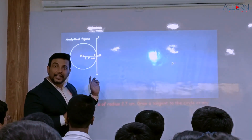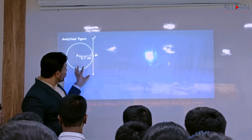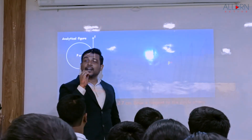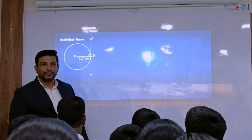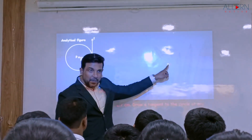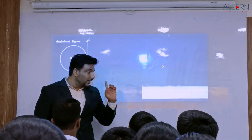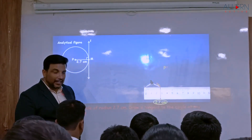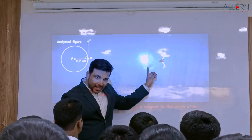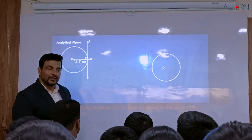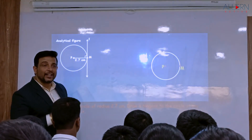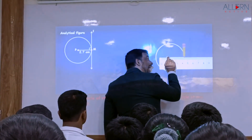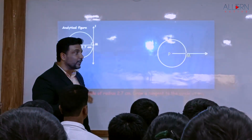Now that we have drawn the analytical figure - in other words we call that a rough figure - based on that, we need to draw a fair figure which will look very similar to this. First of all, we need to have a circle with center P. What is the radius of the circle given? The radius is 2.7 centimeters. So we take 2.7 centimeters on the compass. Keeping the pointer of the compass at P, we draw a circle. The moment we draw the circle, we mention the radius and write the length: PM is 2.7 centimeters.